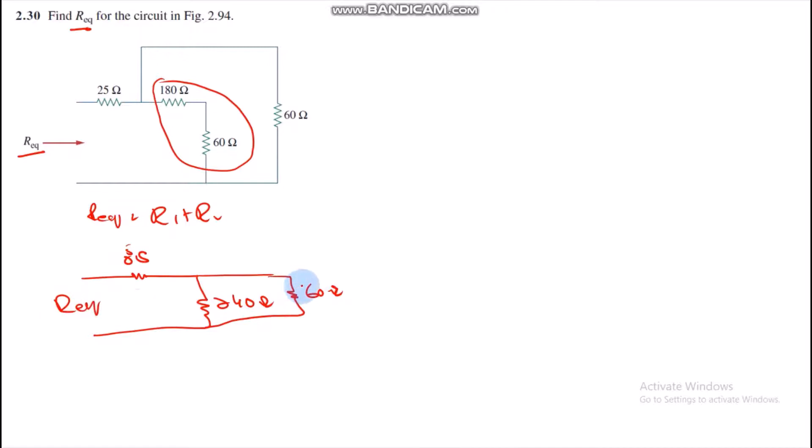If we look at this circuit, these two resistances are parallel. Parallel circuit formula is 1 upon R-equivalent equals 1 upon R1 plus 1 upon R2.